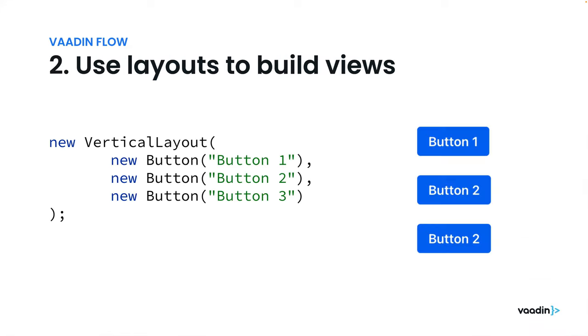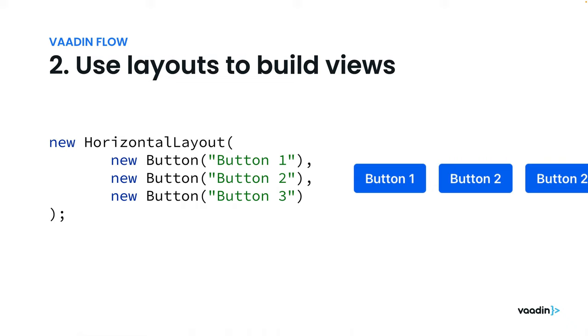You can then use layouts to build views out of the components. For instance, with a vertical layout you can stack components vertically. A horizontal layout lets you put them next to each other horizontally. Or you could use one of the more advanced layouts.